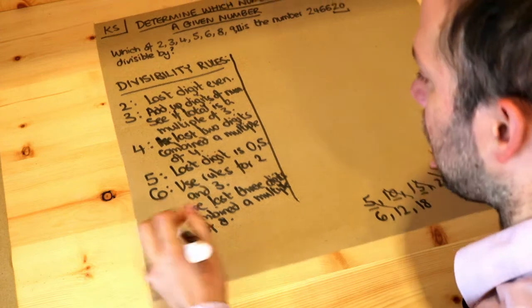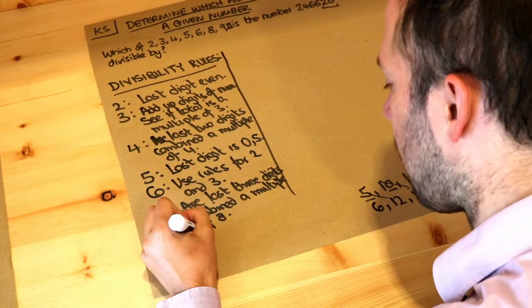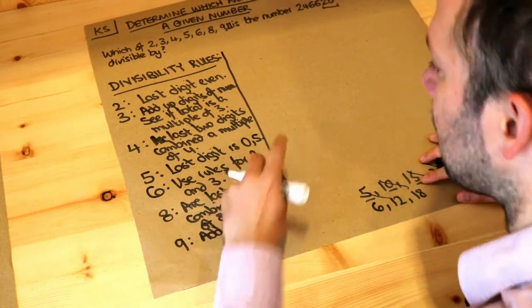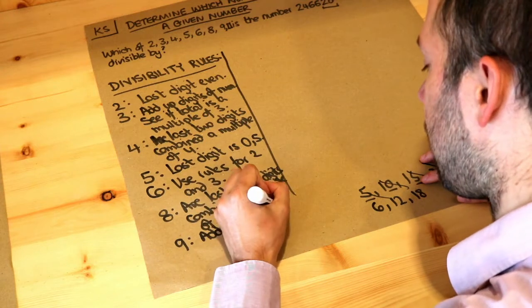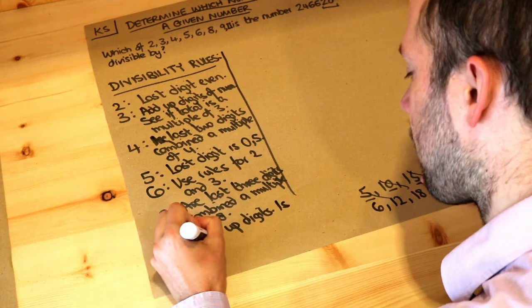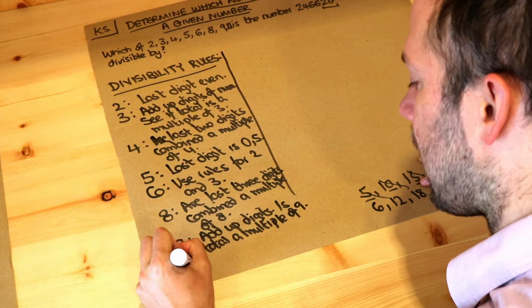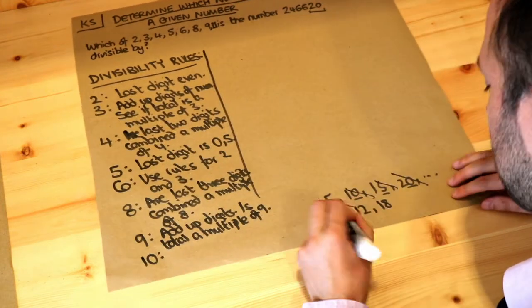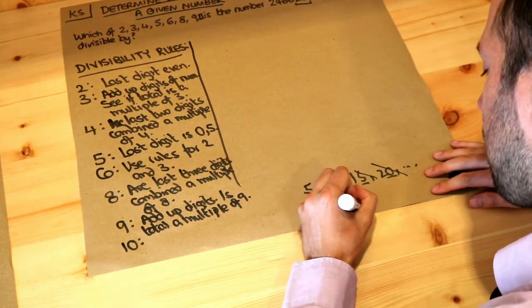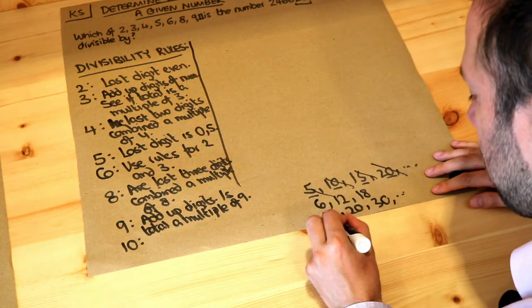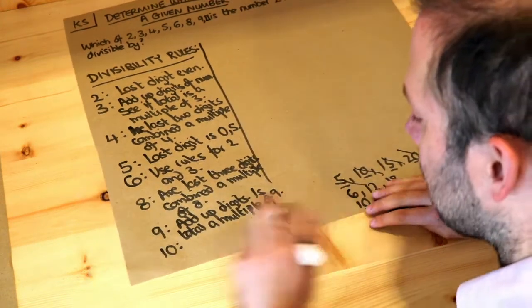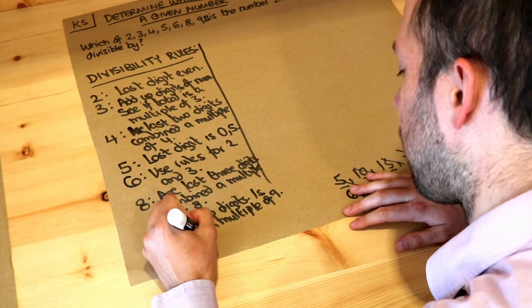Then 9 is very similar to the 3 rule. You add up the digits and instead of seeing the total's a multiple of 3, you see is the total a multiple of 9. For 10, well if we look at the 10 times table: 10, 20, 30, you can see they all end with 0. So we just have to look at the last digit. So is the last digit 0?